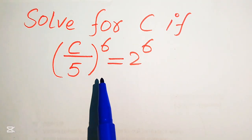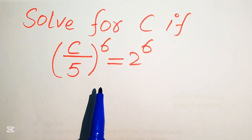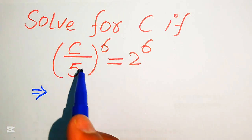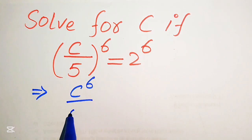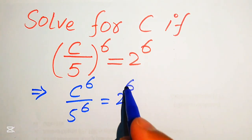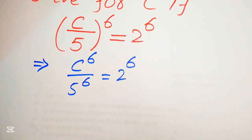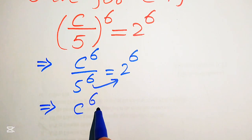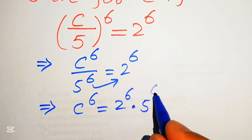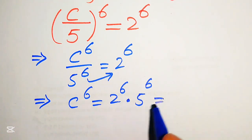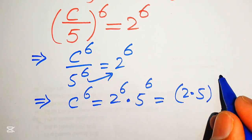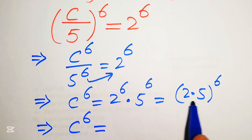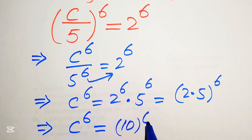Here you see that this is a sixth order equation, which means that we need to find all six roots of this equation. First we can separate this and write it as C to the power of 6 divided by 5 to the power of 6 equals 2 to the power of 6. We move 5 to the power of 6 to the right hand side, giving C to the power of 6 equals 2 to the power of 6 multiplied by 5 to the power of 6. We combine these two exponents as 2 multiplied by 5, with exponent 6. Since 2 times 5 is 10, this becomes C to the power of 6 equals 10 to the power of 6.